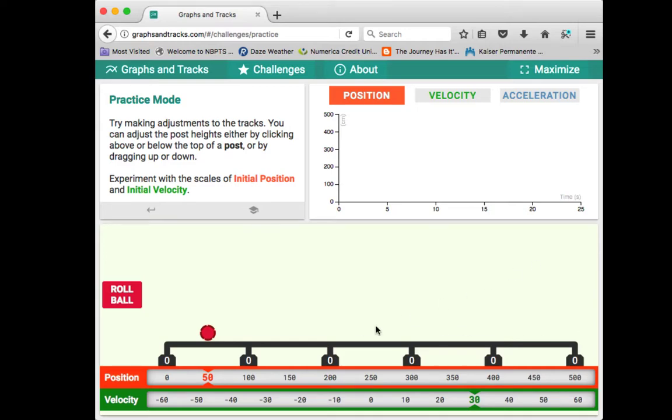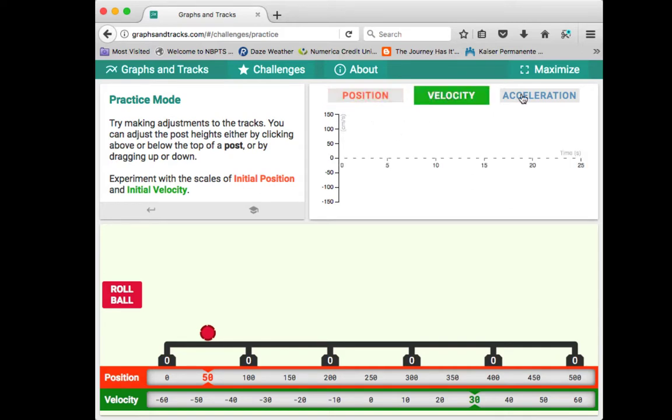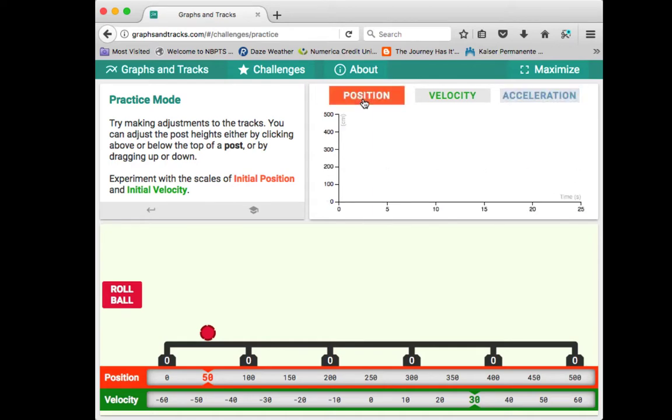In Graphs and Tracks, you have a track that you can adjust the height of, a ball that rolls along the track, position and velocity indicators below the track and ball, and graph windows for position, velocity, and acceleration above and to the right.